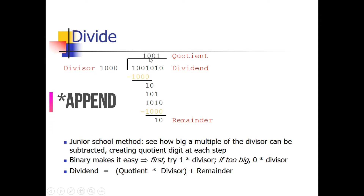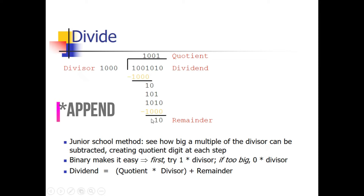To bring this bit down we add a 0 in the quotient. But 101 is still smaller than 1000, so we need to get one more bit from the dividend. Our bits become 1010 and one more 0 is appended to the quotient, making it 100. We check whether 1010 is greater than the divisor — it is, so we place the divisor, add 1 to the quotient, subtract, and get remainder 10. This completes the simple division.